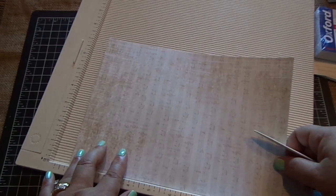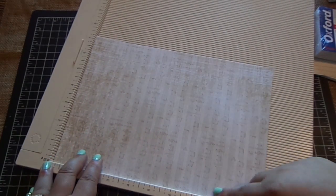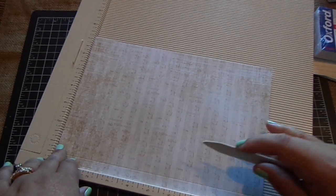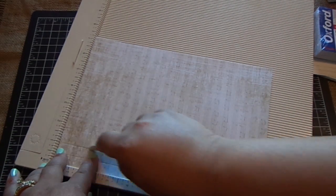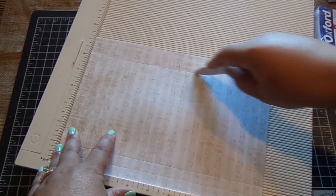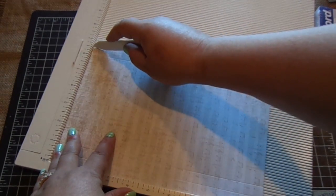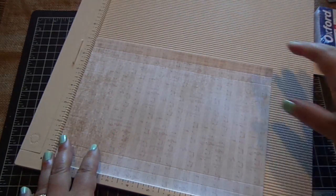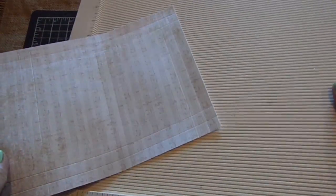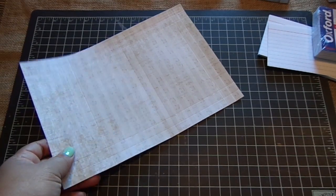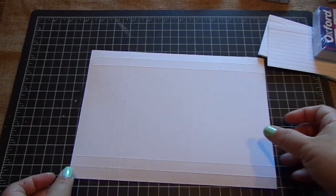And then you're going to flip it to the seven and one eighths inch side and you're going to score it at half an inch. One. Six and one eighths. And six and five eighths. So let's put that to the side. Let me flip it so you can see the score lines better.